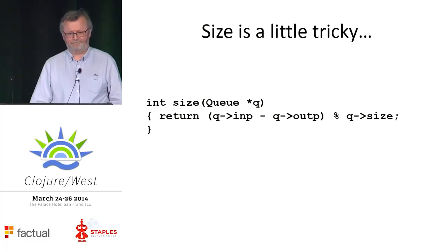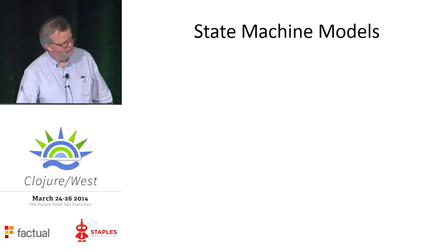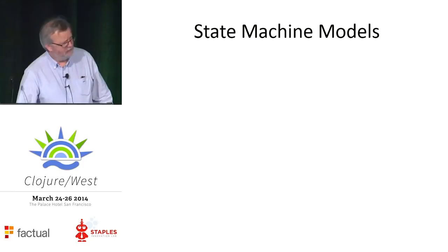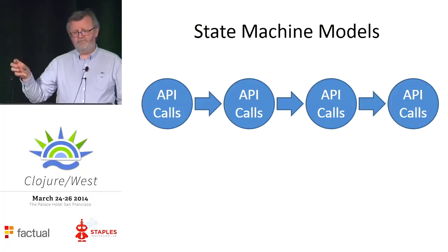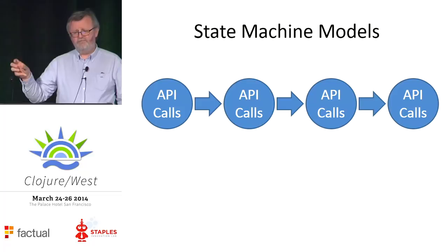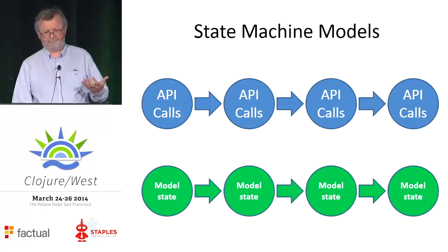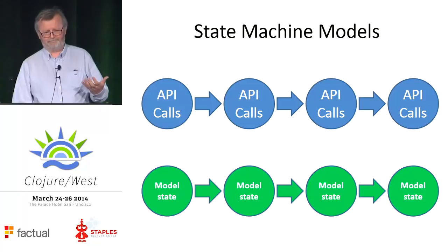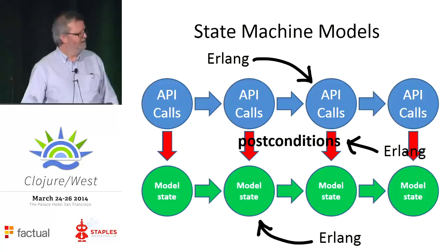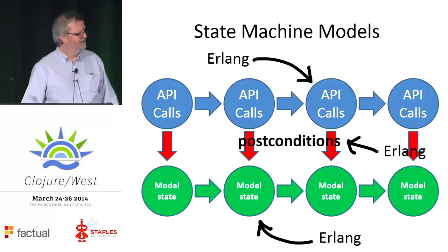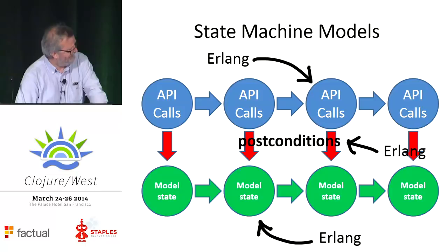So how do we test this kind of code? The approach we found works well is to use a state machine model. We generate test cases that are sequences of API calls, and we also model the state of the system in some simple way. For each API call we define a state transition function that tells us how the model state changes, and then we write postconditions that compare the results of the real API calls to the state of the model. All of my specifications are always written in Erlang. Let's see how it applies to this circular buffer example.